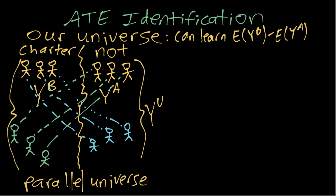And then on the other side is our treated potential outcomes. So what we want to learn is not about YA and YB, but about YT and YU.